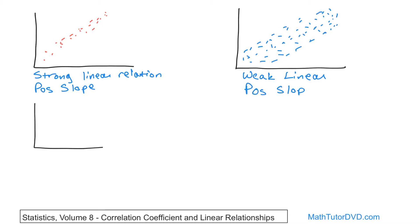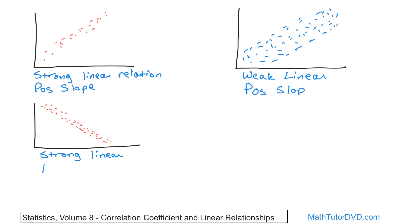Now let's look at a couple more cases. Let's say we have one that looks like this — the data points are more or less in a line or tightly compacted, something like this. What do you think this is? Well, this is a linear relationship. It's a pretty strong linear relationship because the dots are pretty tightly packed around whatever line is there. We'll say it's strong linear, and we'll say it's a negative slope.